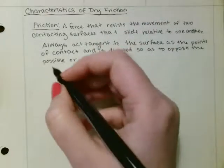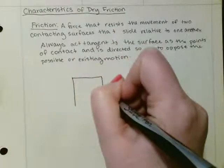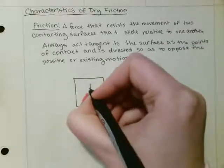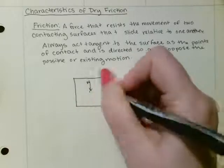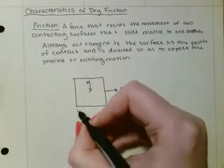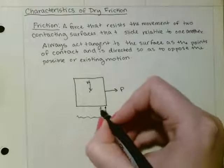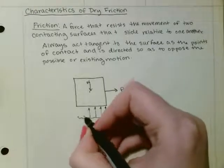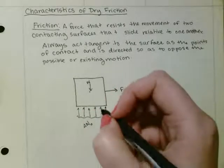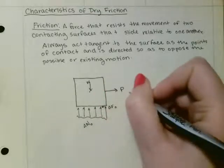Let's look at a free body diagram of that. If we had some kind of crate with a weight W and we were pulling with a force P, we would have a normal force — we'll call this delta N — and then we would have a frictional force delta F opposing the motion.